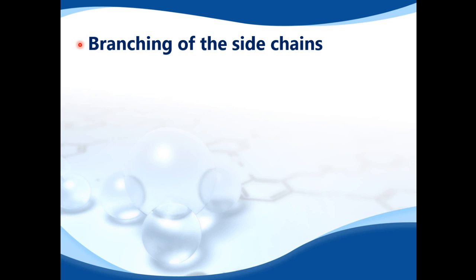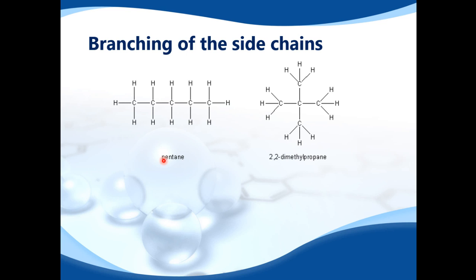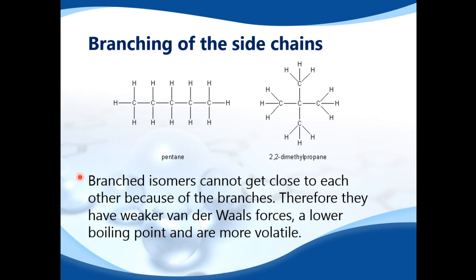The second factor is branching of the side chains. Here we have two alkanes: on the left is pentane, and on the right is 2,2-dimethylpropane. They both have the same number of carbon atoms and the same molecular formula — C5H12 — so they are isomers of each other, with different structural formulas. Branched isomers cannot get close to each other because they have branches, or side chains. Therefore, they have weaker van der Waals forces, a lower boiling point, and are more volatile. So 2,2-dimethylpropane has a lower boiling point and higher volatility because the molecules cannot get close together, which equals weaker van der Waals forces.